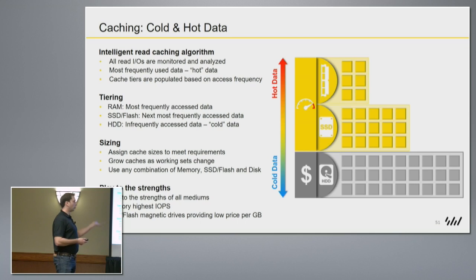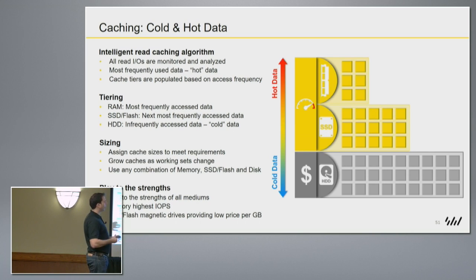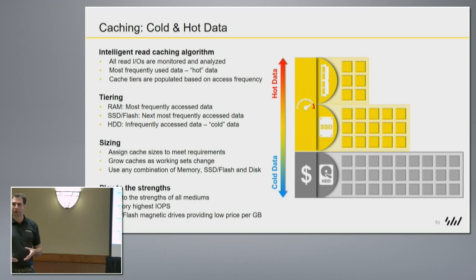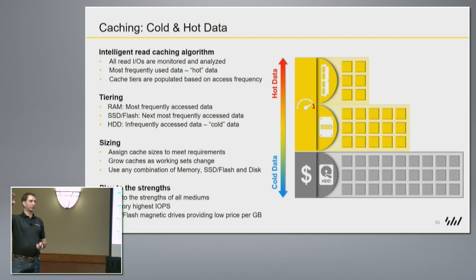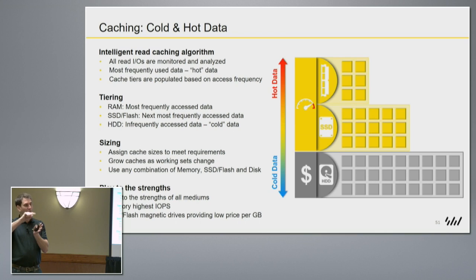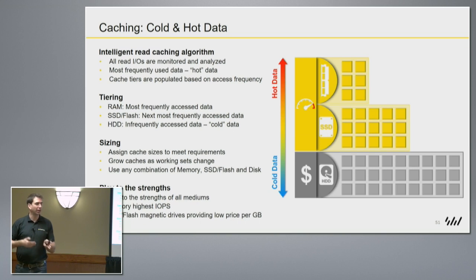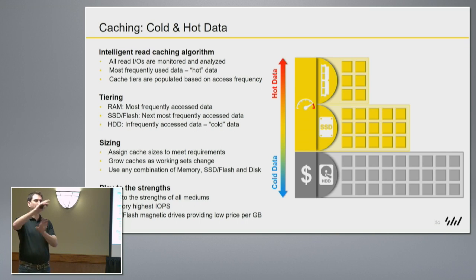All we're talking about is hot and cold data. As data is read more frequently, it moves up through those tiers. Our algorithm is intelligent in that it monitors data over a period of time, and that window of time gets adjusted based on change rate. We don't want data sitting in the cache just because it was hit 10 times yesterday but isn't being accessed today — that isn't a candidate to stay up there; it could have been a fluke. By using a moving window, we create a time-sensitive placement for data. As working sets evolve, data can be de-staged to make space for new frequently accessed data. It's very fluid.